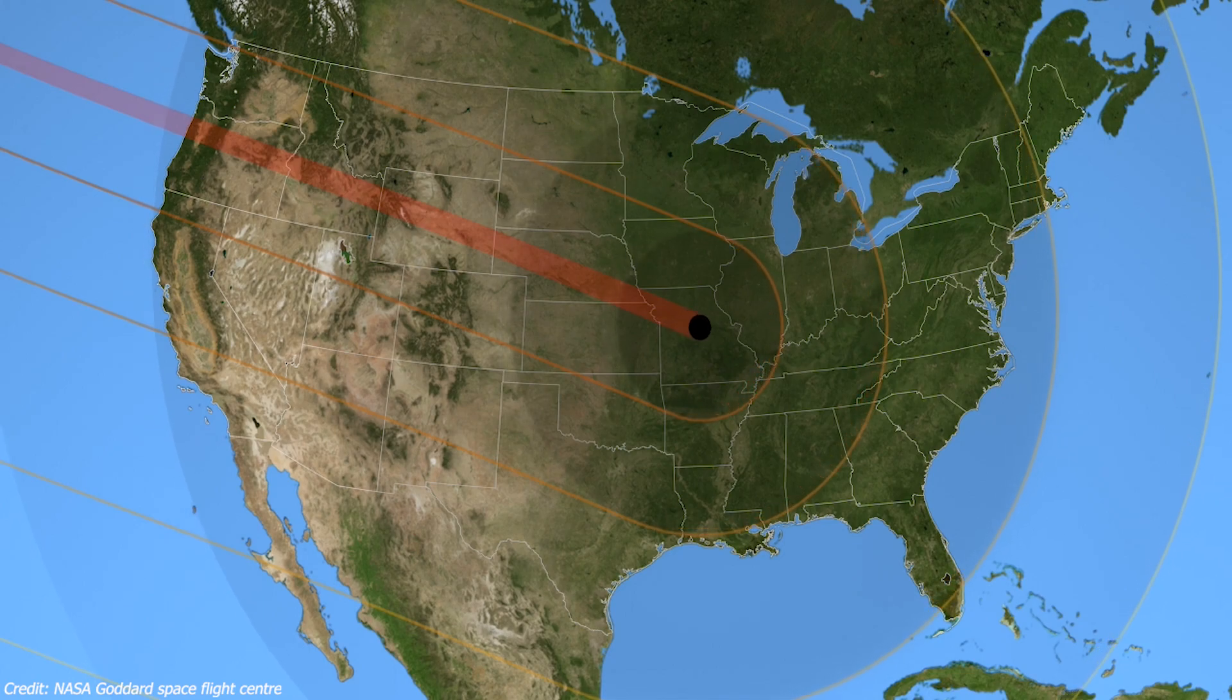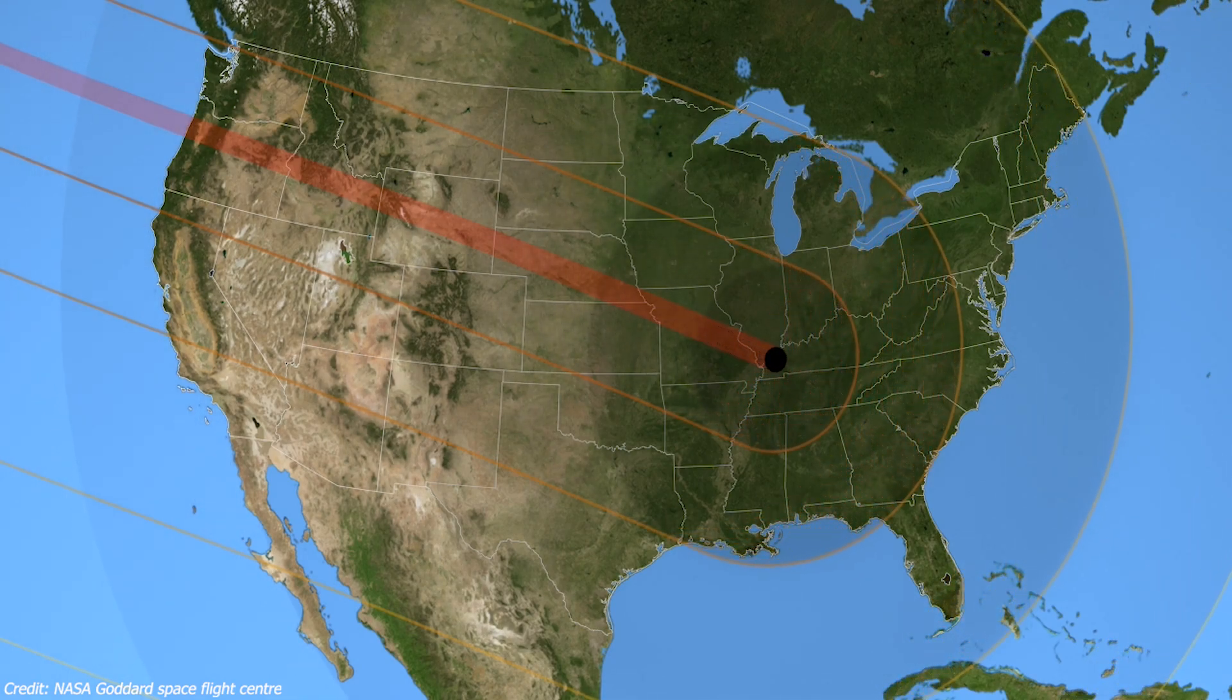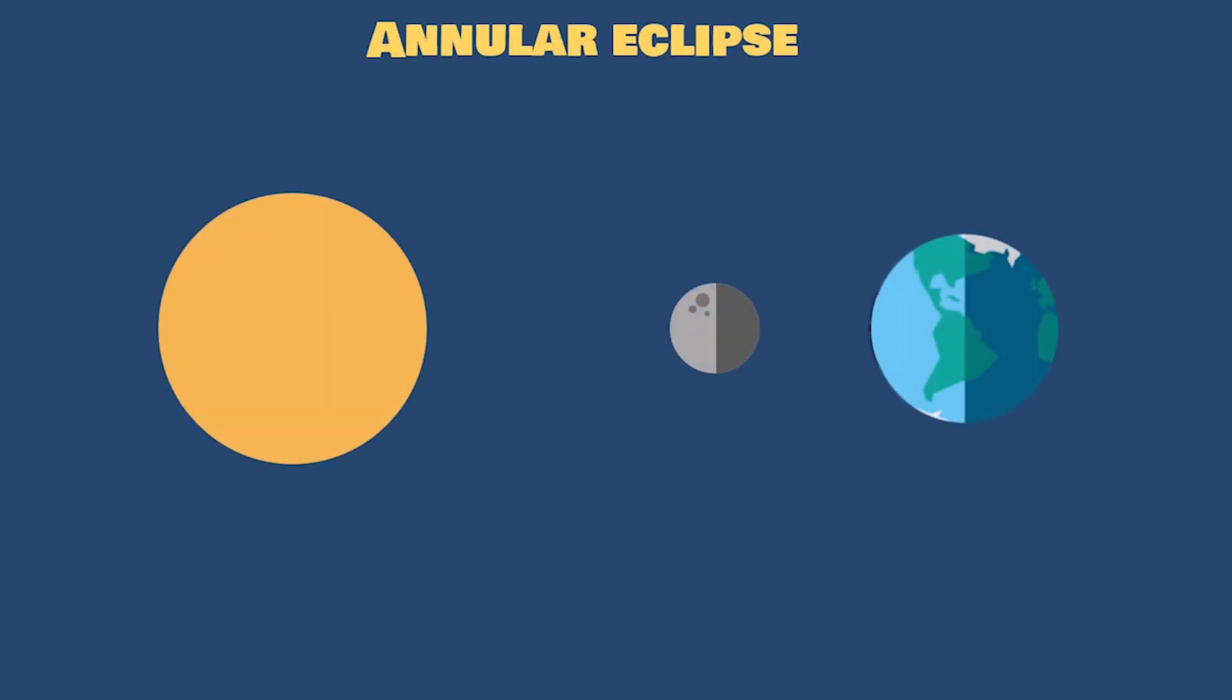The places outside umbra, which is the penumbra, experience a partial eclipse. The annular eclipse occurs when the sun and moon are exactly in line with the Earth but the apparent size of the moon is smaller than that of the sun. Hence the sun appears as a bright ring or annulus surrounding the dark disk of the moon.